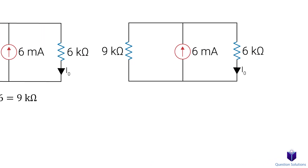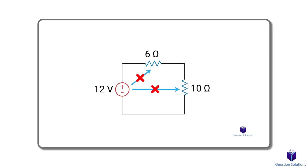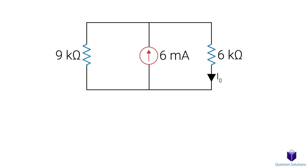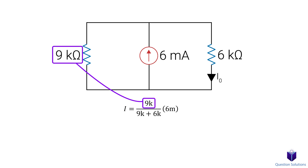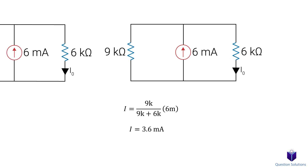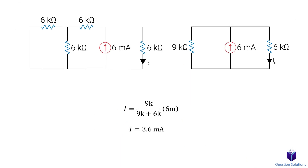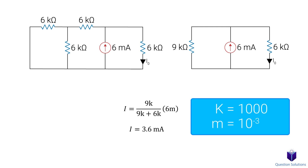I have a whole video on combining resistors in parallel and in series, so if you need a refresh, I highly encourage you to take a look at that video first. Using current division, we can figure out the current in the 6k ohm resistor. In current division, the top of the fraction is the resistor current we don't want, and the bottom is the addition of the two resistor values in the circuit. So here, we want the current in the 6k ohm resistor, so the 9k ohm resistor goes on top. We get 3.6 milliamps. Note that k represents 1000 and m represents 10 to the negative 3.